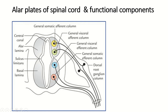In the alar plate, near the roof plate, there is a nucleus called the general somatic afferent column. It collects sensory information arising from the ectoderm and somites. The general visceral afferent column collects sensory information from structures derived from the endoderm and splanchnic layer of the lateral plate mesoderm.